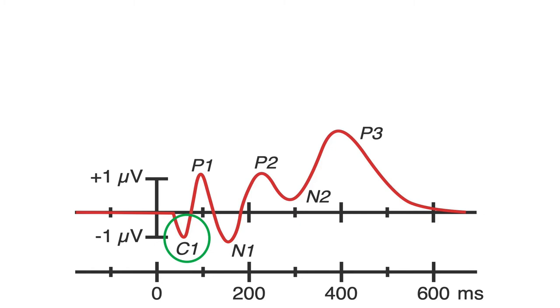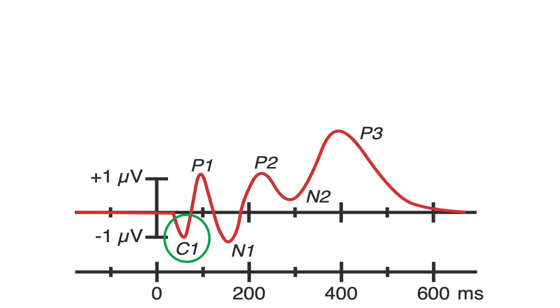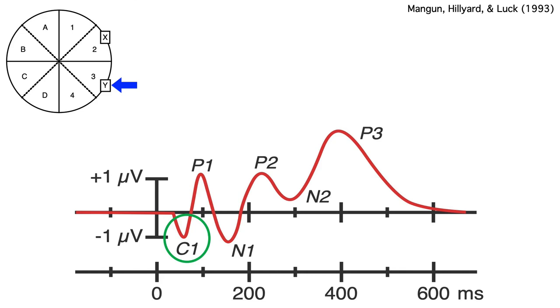We don't even use P or N for the very first visual response, which comes from primary visual cortex. We call this response C1 because it can be either positive or negative depending on whether the stimulus is presented above or below the point of fixation.